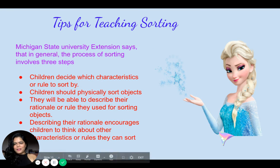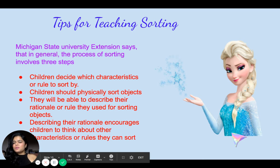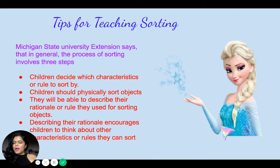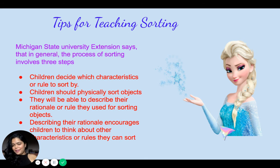Tips for teaching sorting. Michigan State University Extension says that in general, the process of sorting involves three steps: children decide which characteristics or rule to sort by; children should physically sort objects; and they will be able to describe their rationale or rule they used for sorting. Describing their rationale encourages students to think about other characteristics or sorting rules that they can sort by.